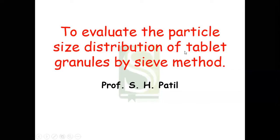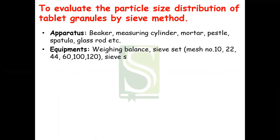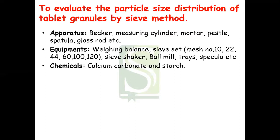Welcome. Today we are going to see the experiment to evaluate the particle size distribution of tablet granules by sieve method. The requirements for this experiment: in apparatus we are going to require beaker, measuring cylinder, mortar, pestle, spatula, glass rod, etc. In equipment we will require a weighing balance, sieve set with different sieves of mesh number 10, 22, 44, 60, 100, 120, a sieve shaker, trays, spatula, etc. In chemicals we will require calcium carbonate and starch.